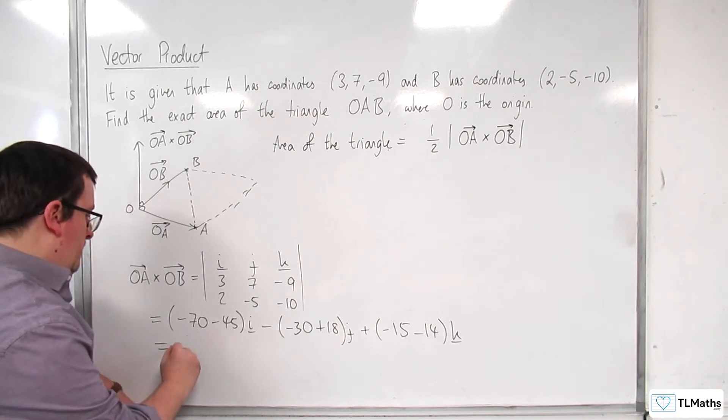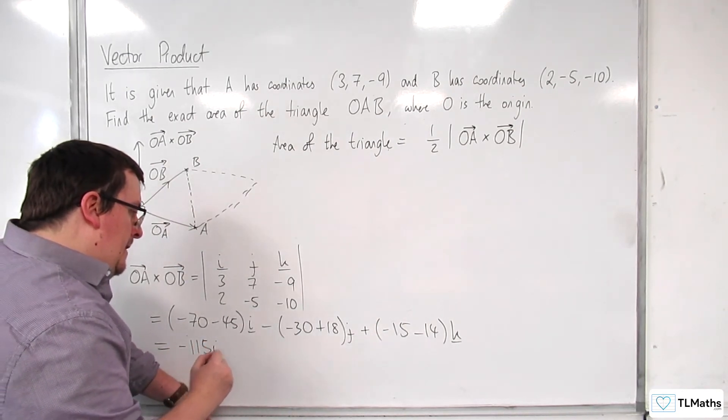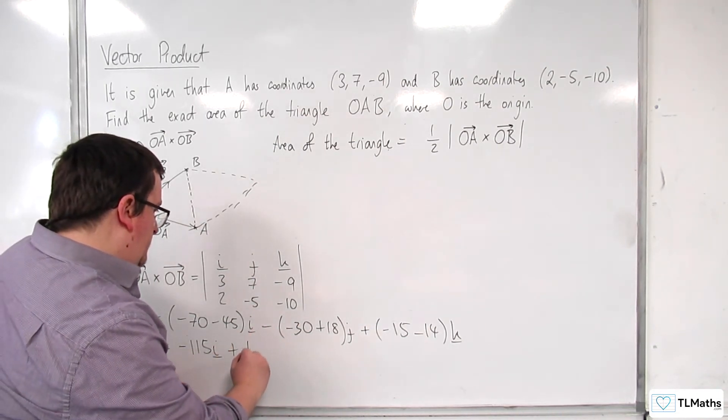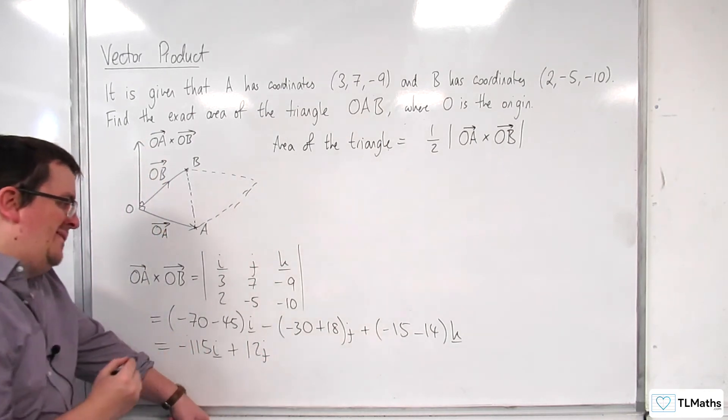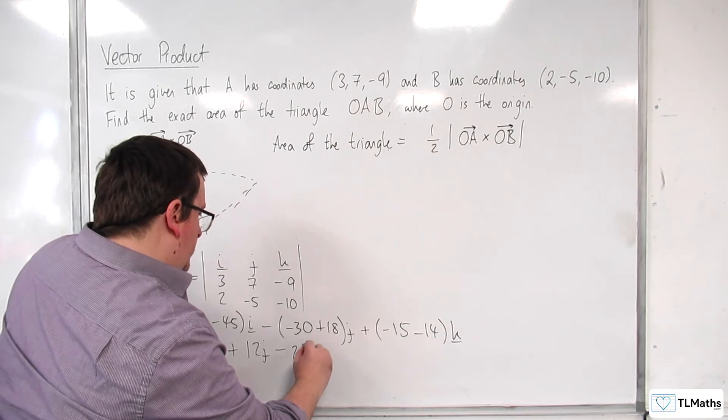So we've got minus 115i. Minus 30 plus 18 is minus 12, so plus 12j. Minus 29k.